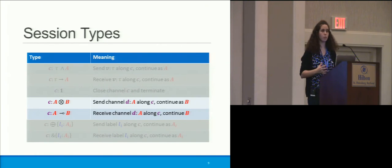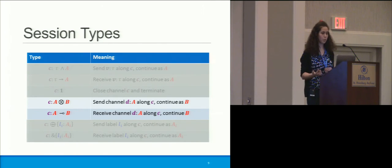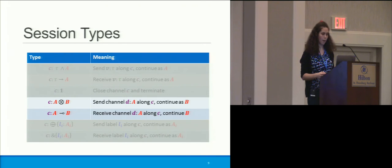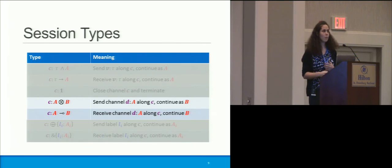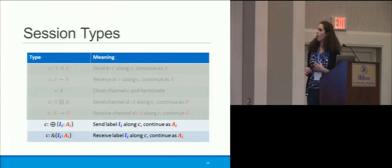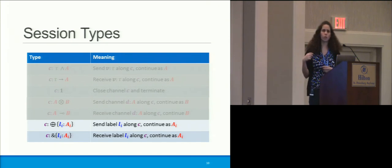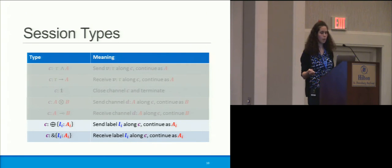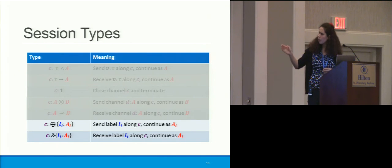Now the higher-order session types — where we can send channels along channels, which is where the interesting behavior happens. 'A tensor B' means I'm going to send some channel D of type A along C and continue on as B. The dual 'A lollipop B' means receive some channel D of type A along C and continue as B. When doing these higher-order sends and receives, we're actually spawning off new channels D of type A. Finally, we have internal or external choice, where you make a choice about what service to use and continue on as the corresponding type.